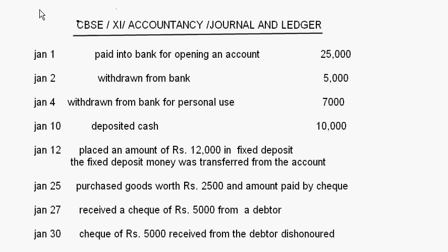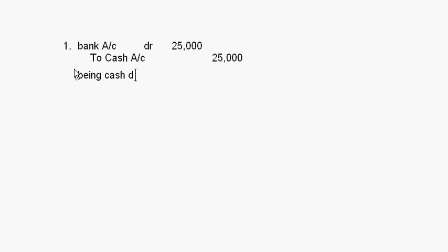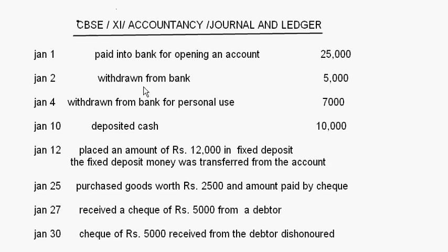Let's start with the first one: paid into bank for opening an account rupees 25,000. When we open a bank account the entry is bank account debit to cash account. We say this is 25,000 here and 25,000 here, being cash deposited to open an account.